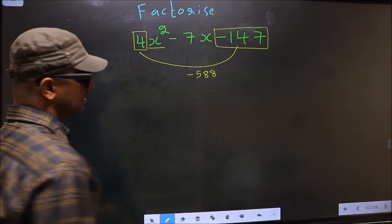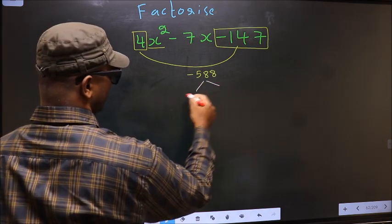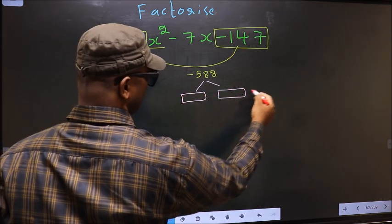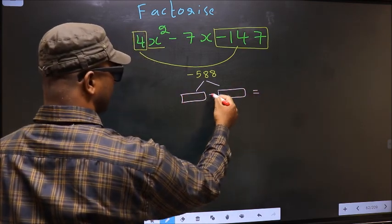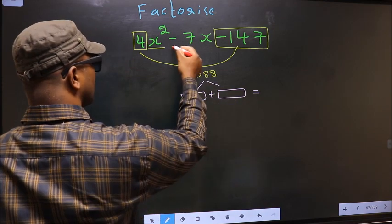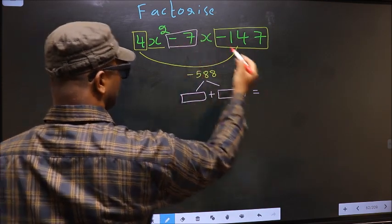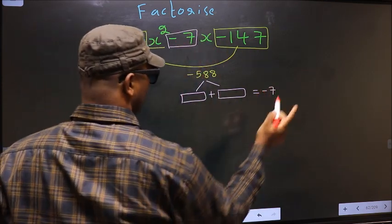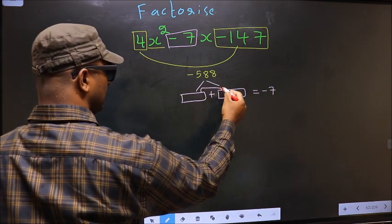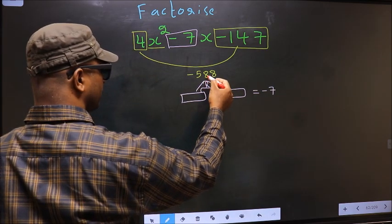Next. Now you should look out for two numbers such that when you add these two numbers, you should get the middle coefficient -7, and also when multiplied, you should get -588.